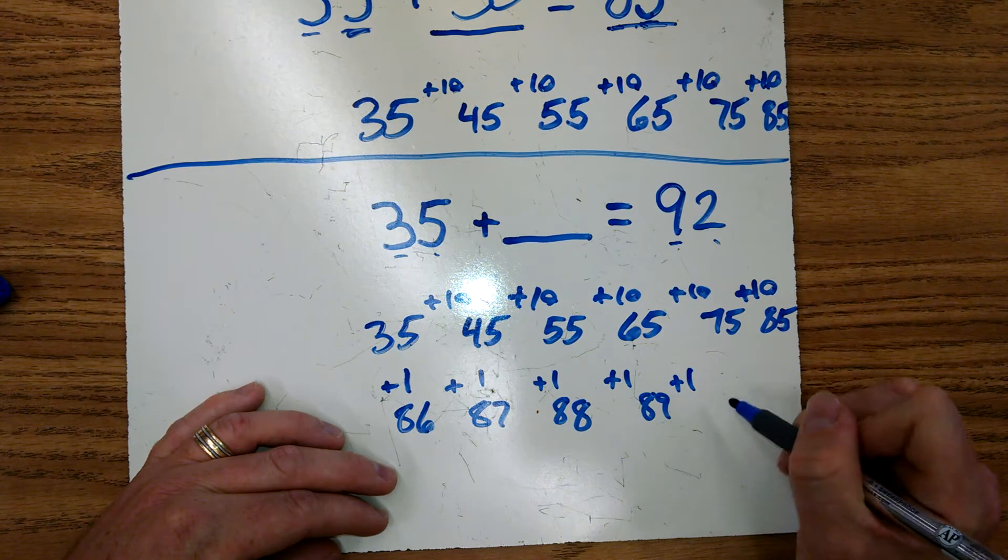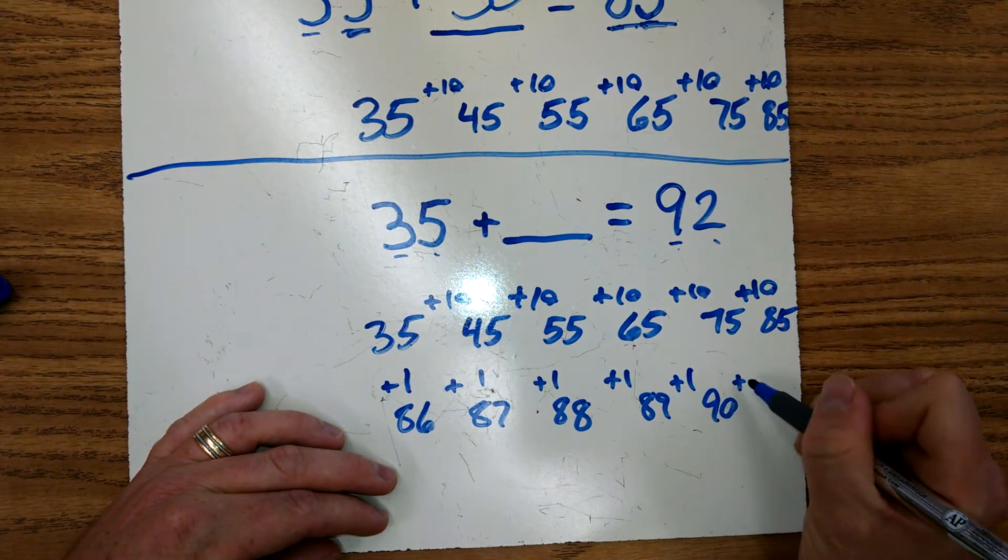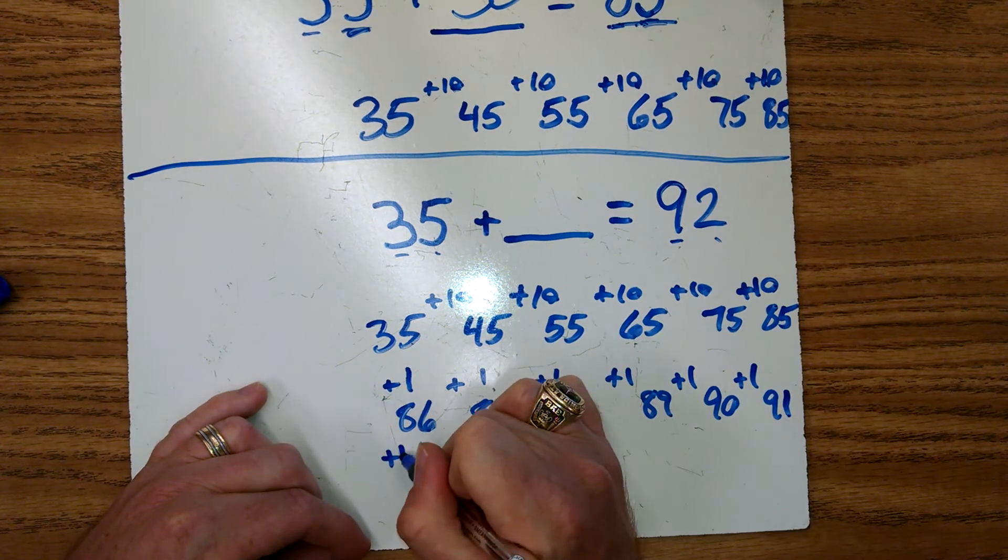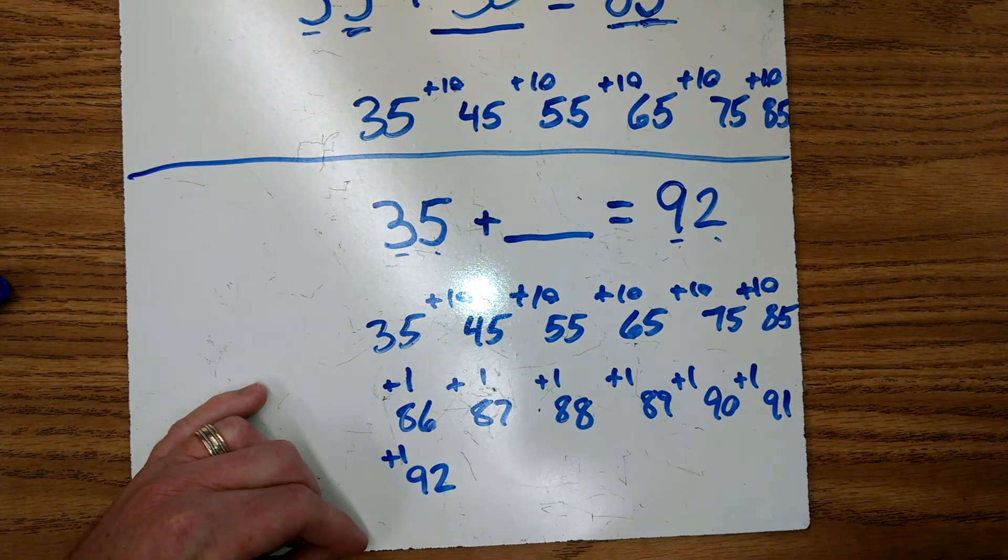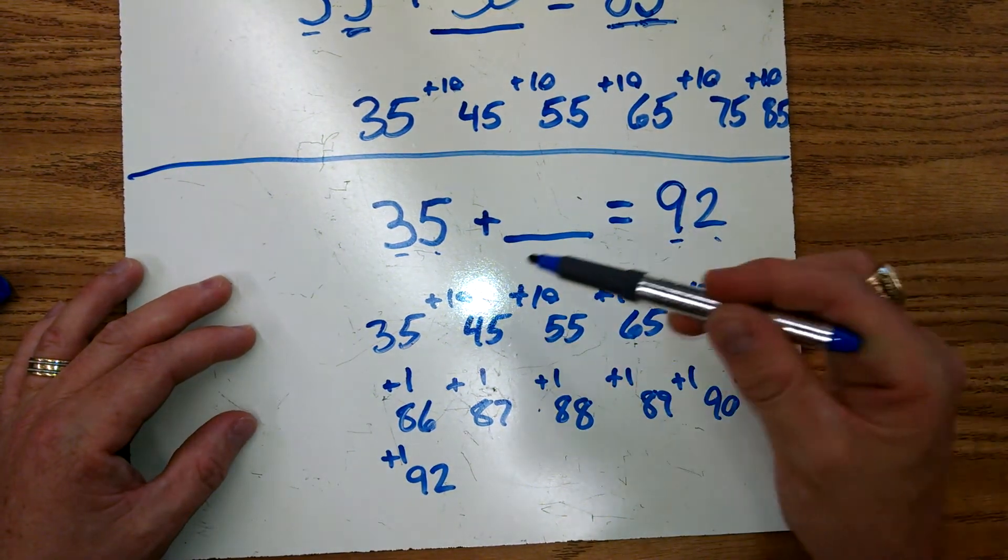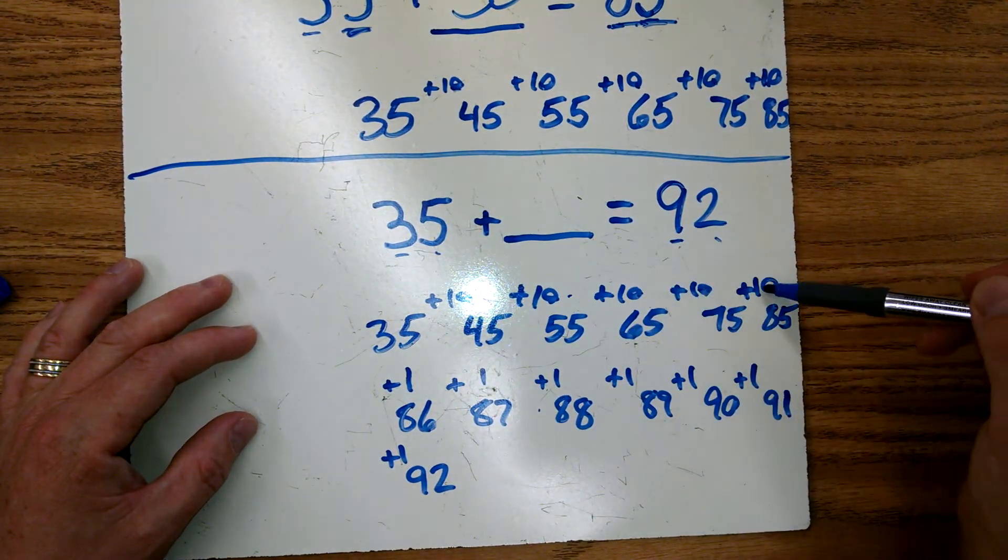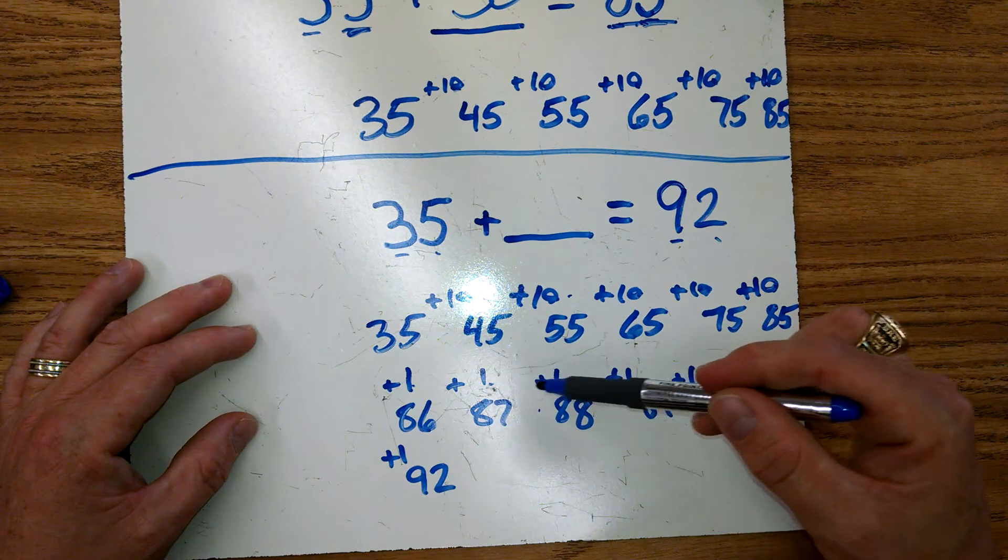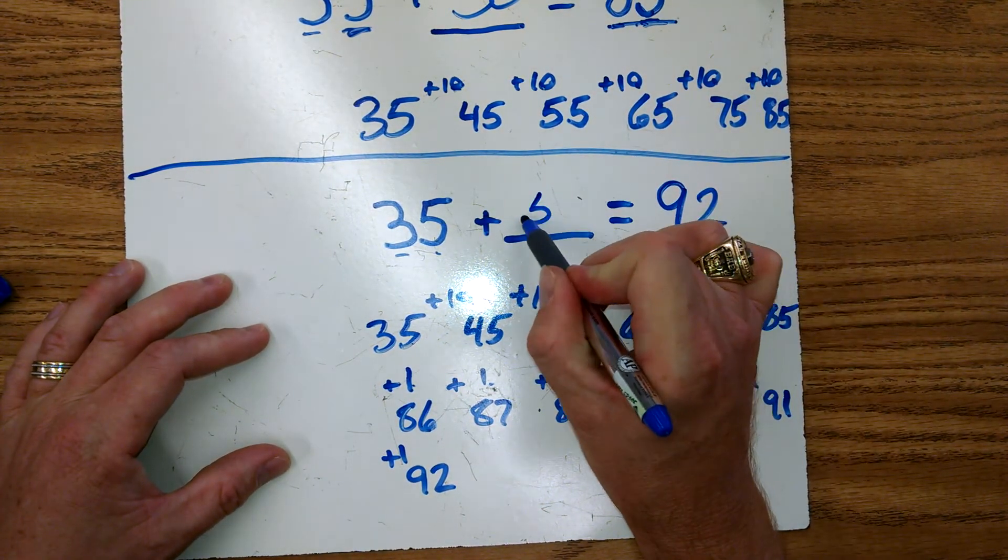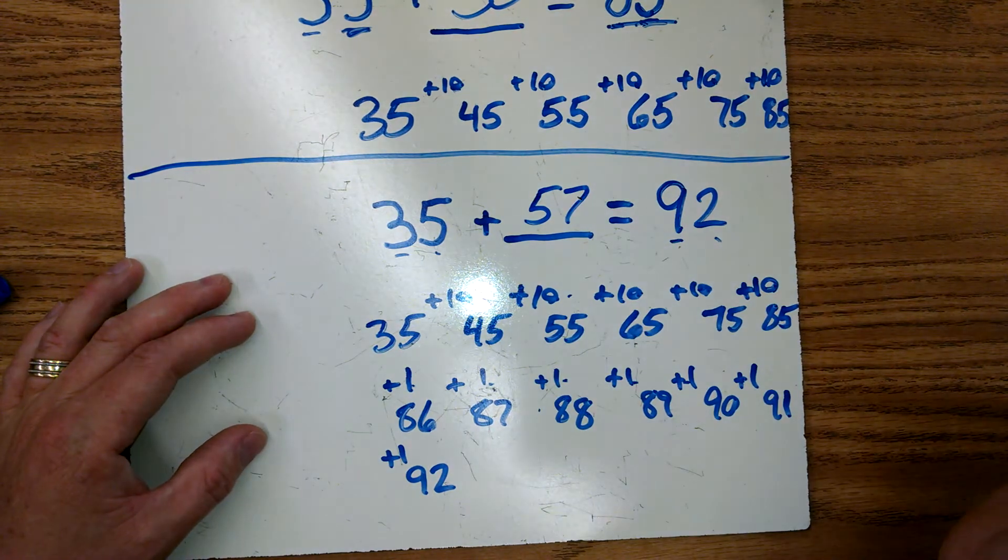Now we just go back and pick up the pieces: 10, 20, 30, 40, 50, 51, 52, 53, 54, 55, 56, 57. And we always want to try to check our answer.